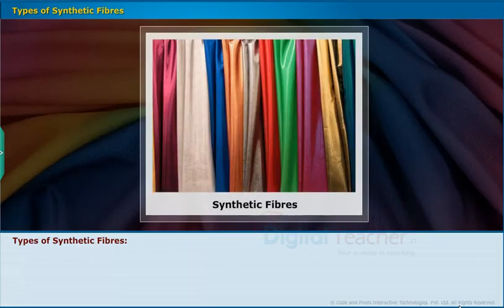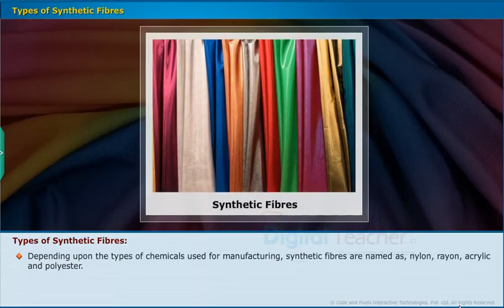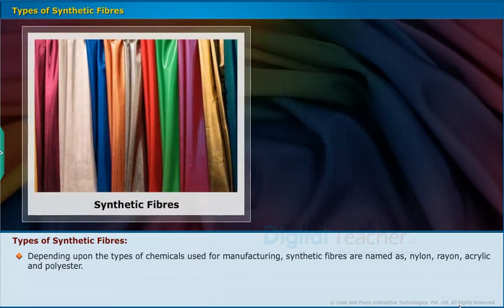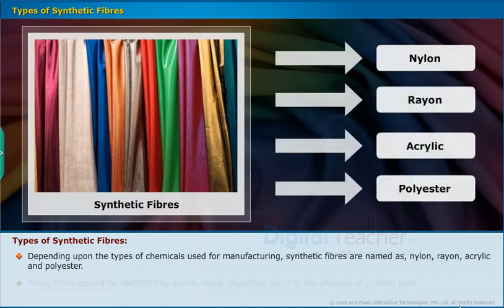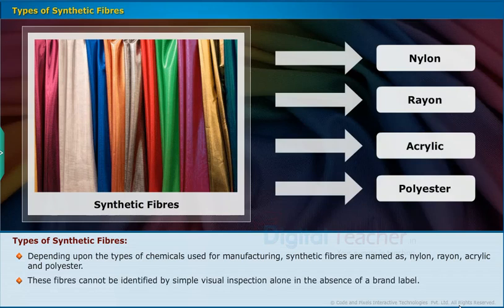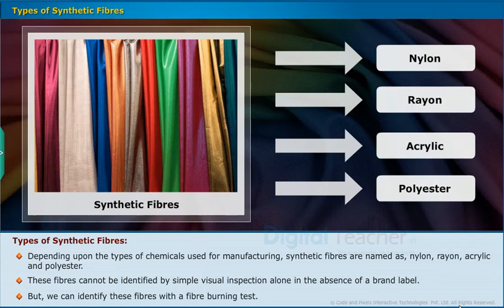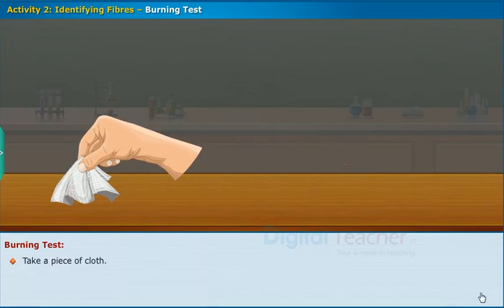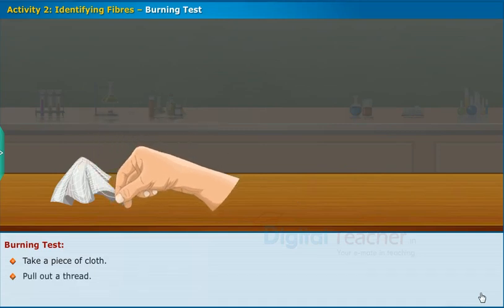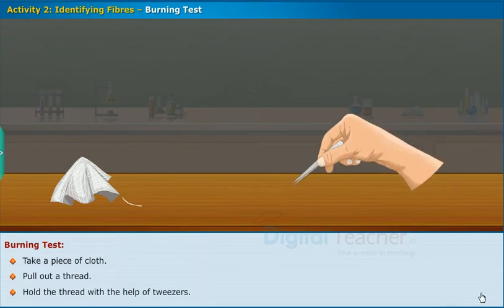Types of Synthetic Fibers: Depending upon the types of chemicals used for manufacturing, synthetic fibers are named as nylon, rayon, acrylic and polyester. These fibers cannot be identified by simple visual inspection alone in the absence of a brand label, but we can identify these fibers with a fiber burning test. We can perform a simple activity: take a piece of cloth, pull out a thread, hold it with tweezers, and burn the thread on the edge of a flame.